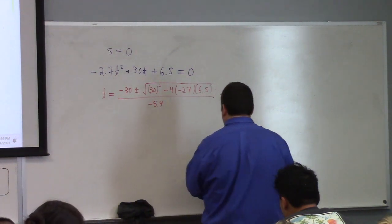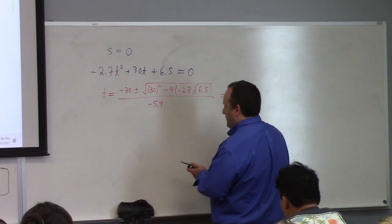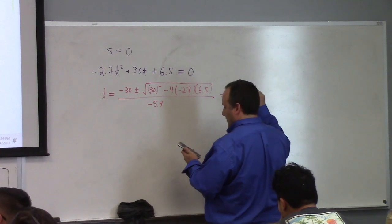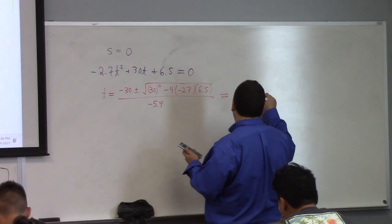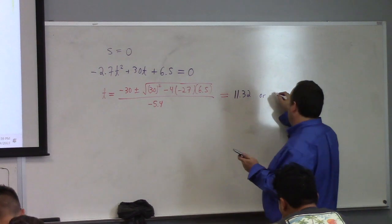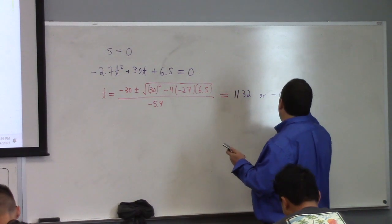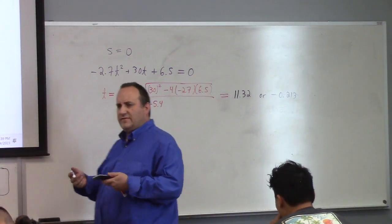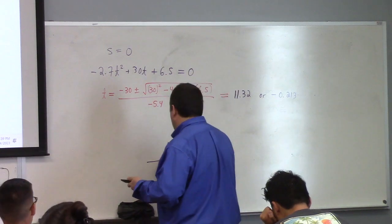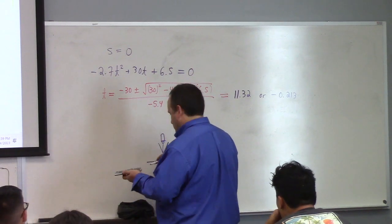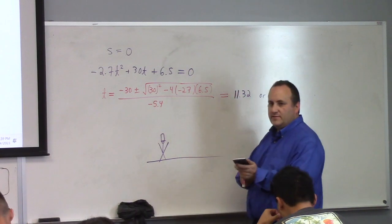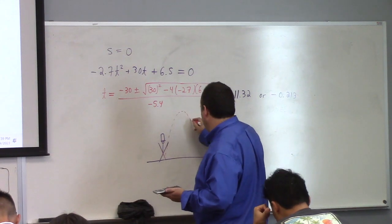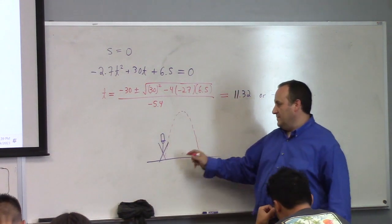We get 11.32 or minus 0.213. Do you understand why the math does that? So, like, you got this guy, right? And he's doing what? He's throwing the ball upward. So a picture of it, something like this.